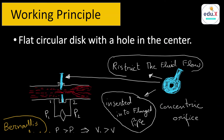Now let's talk about the working principle. The orifice plate is a circular plate with a hole in the middle that restricts fluid flow and causes a pressure drop. Using Bernoulli's equation, we derive the relation for measuring the volumetric flow rate passing through the orifice hole. In the diagram, the blue line represents the orifice inserted in a pipe, flanged together for easy installation.